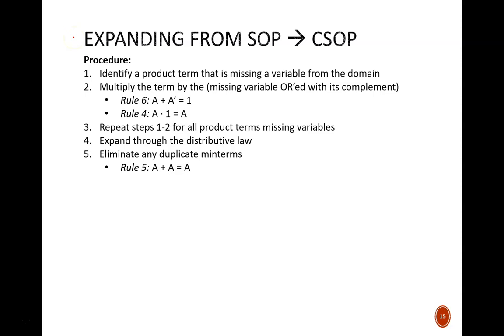First, let's expand from standard to canonical sum of products form. The procedure is outlined here with an example to follow. 1. Identify a product term that is missing a variable from the equation's domain. 2. Include that missing variable by multiplying the product term by the missing variable ORed with its complement within parentheses. Repeat steps 1 and 2 for all missing variables. Then, expand the equation through the distributive law. Finally, if there are any duplicate product terms, eliminate one of them. Note that we are not violating any of the Boolean algebra rules in this procedure. Generally, we are merely applying a couple of rules in the opposite direction that we normally do, expansion rather than simplification.